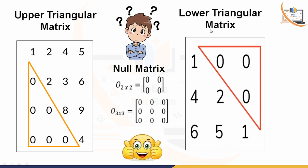Next is the null matrix. Null means zero, and it is normally denoted by the symbol O. If all the elements in a matrix are zero, then it is called a null matrix. This is a two by two null matrix and this is a three by three null matrix. You can increase the order as well, and you can also have a rectangular null matrix. That is the complete idea of upper triangular, lower triangular, and null matrices.